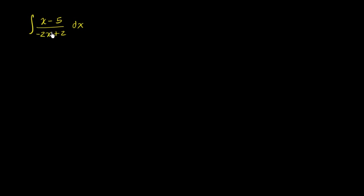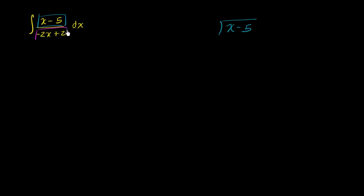That's what this rational expression could be interpreted as: x minus five divided by negative two x plus two. So let's do a little bit of algebraic long division to actually divide negative two x plus two into x minus five, to see if we can rewrite this in a way where we can evaluate the integral. So we're going to take x minus five and divide negative two x plus two into that.